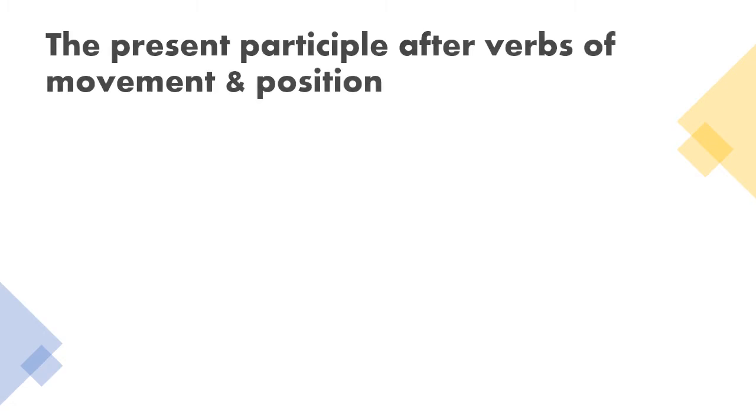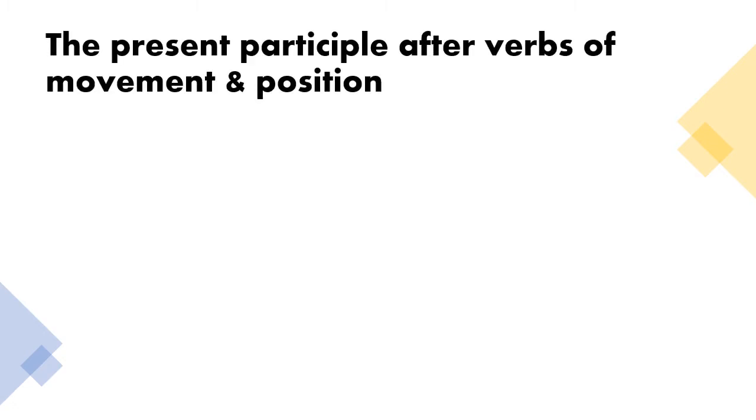Present participle is also used after verbs of movement and position. This construction is particularly useful with the verb to go. For example, she went shopping.